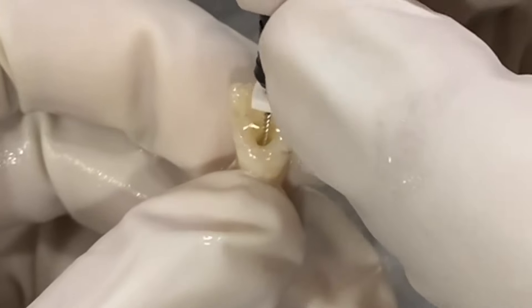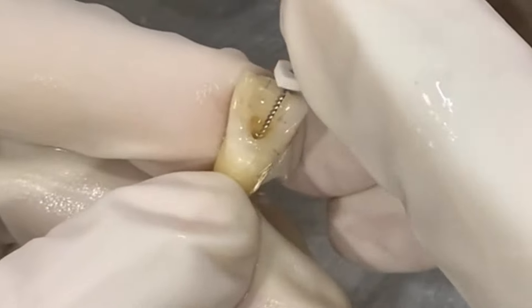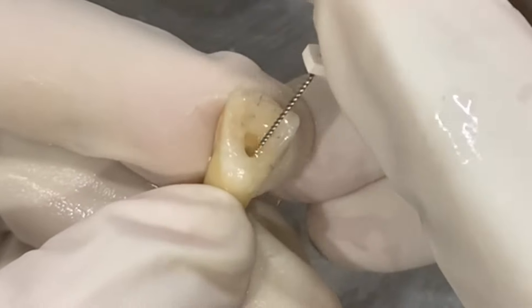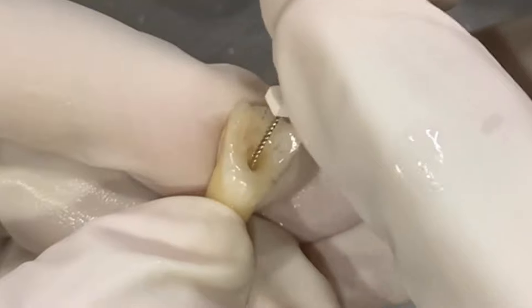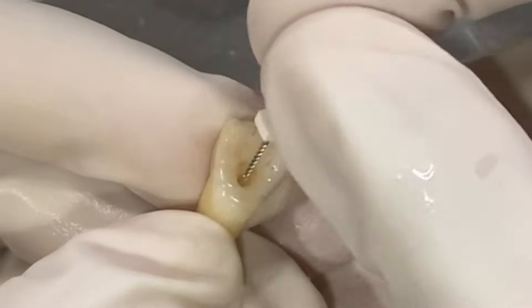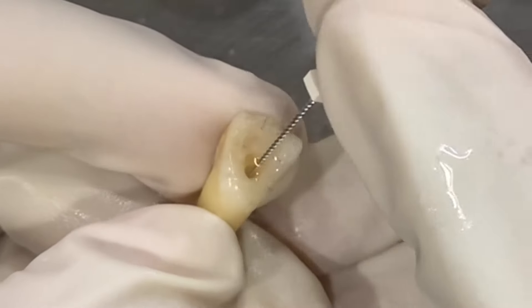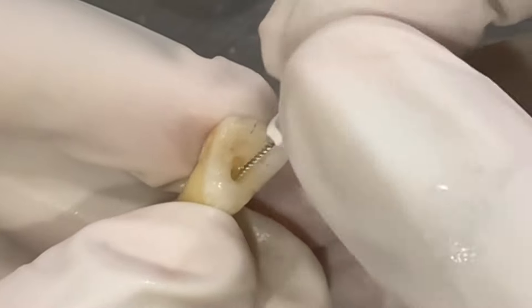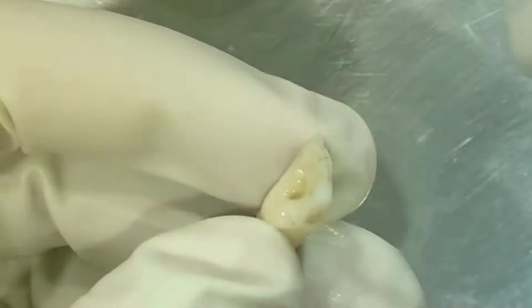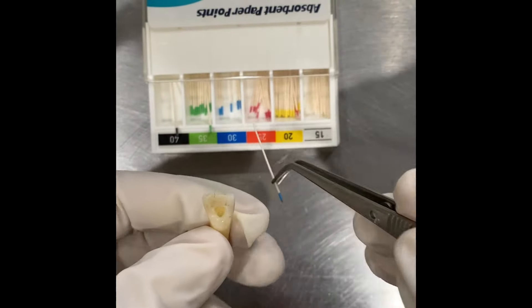The master file is taken till the working length and it is used to smooth out all the steps that have been created. It is moved up and down all along the walls. This helps in refining the walls and gives us a smooth, clean, and continuous taper of the canal in the apical direction.